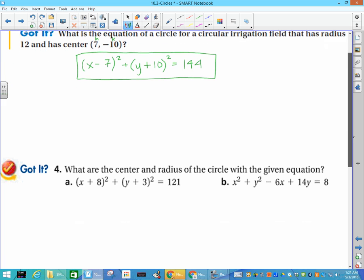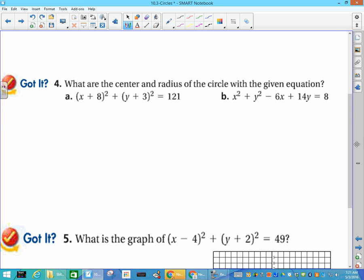What are the center and radius of the circle with the given equation? For part a, (x + 8) means my center is going to be -8 because the opposite of what we see in the parentheses, so the center is (-8, -3) and my radius is the square root of 121, which is 11.